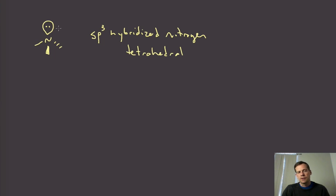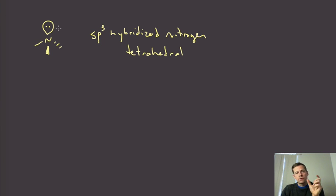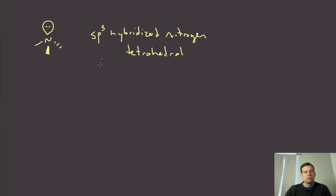This sp3 hybridized nitrogen is tetrahedral. Each of the substituents and that lone pair needs space, and the geometry that gives each of those things the most possible space is tetrahedral. It's just like carbon, except that one of those substituents is a pair of electrons. Now, just as with carbon, if those four substituents are all different, the nitrogen can actually be chiral — it wouldn't be superimposable on its mirror image.